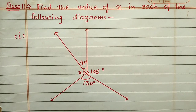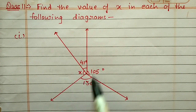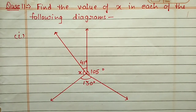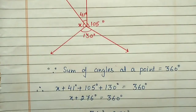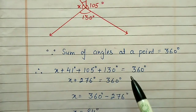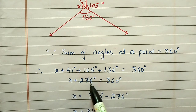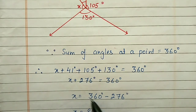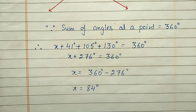Question number eleven, first part: find the value of x. In the figure, there is one point with four angles. The sum of all four angles at a point should be 360 degrees. So x + 41 + 105 + 130 = 360 degrees. Adding the numbers: x + 276 = 360. Shifting 276 to the other side: x = 360 − 276 = 84 degrees.